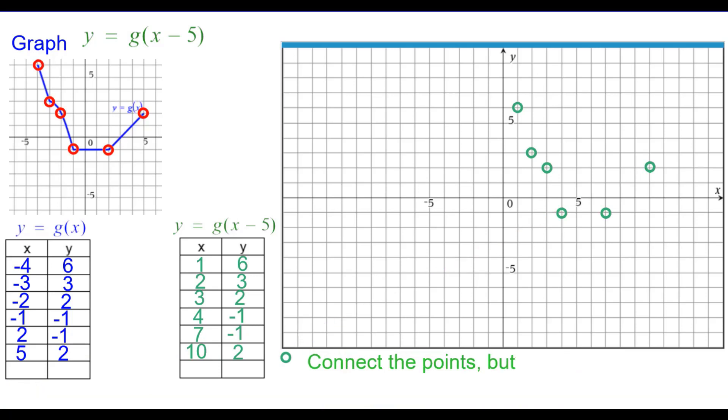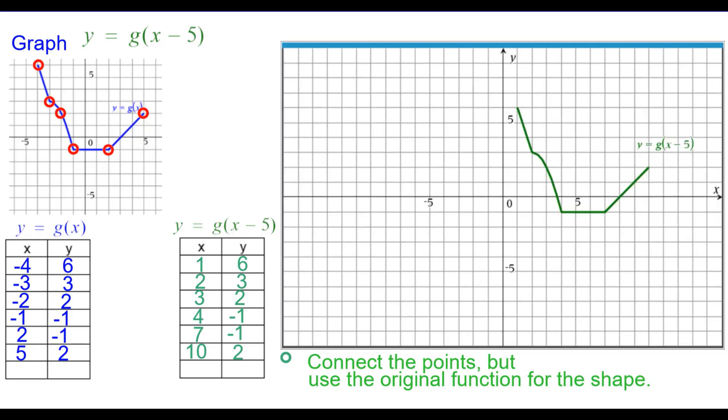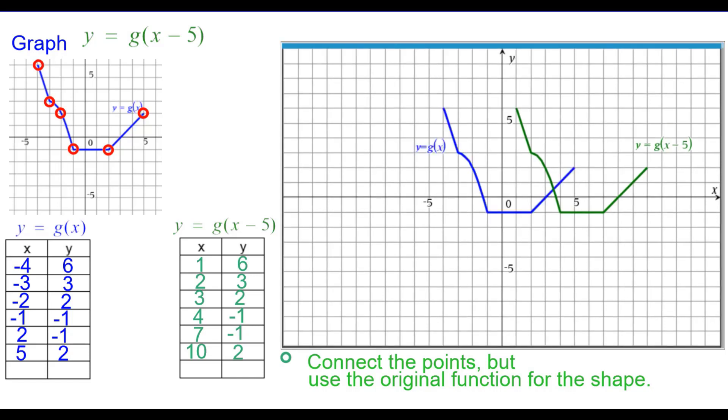Now we can connect the points, but we have to use the original function for the shape to make sure we have the right curves and the right straight segments in the right places. So connecting those points we get this graph, and comparing it to the original parent function going from blue to green, we can see that each point was shifted to the right 5 units.